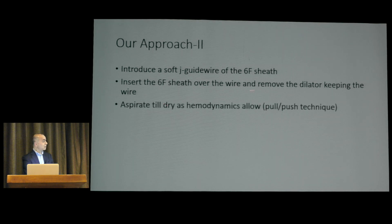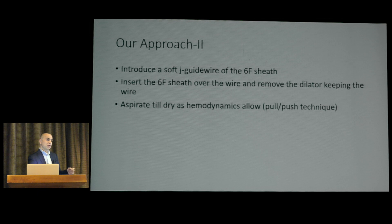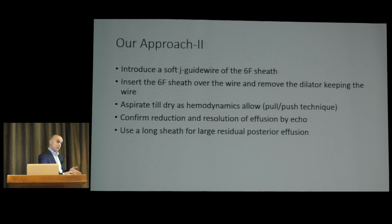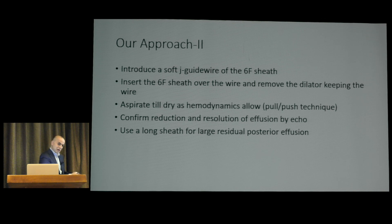Aspirate through the sheath with wire in place until the space is dry. Be careful — rapid aspiration can cause hypotension. At the end, pull the sheath back and forth to allow further aspiration and completely dry the pericardial space. Confirm resolution by echo. For large residual posterior effusions not accessible with a short 6 French sheath, advance a long wire and a 21-centimeter long sheath that goes around the heart, keeping the wire inside for continued access.